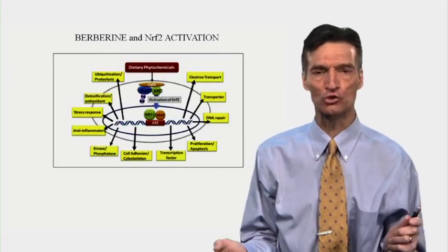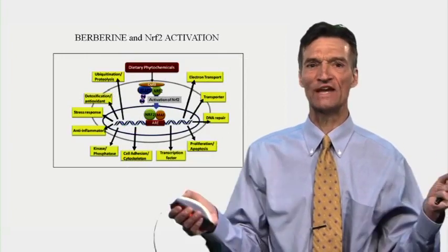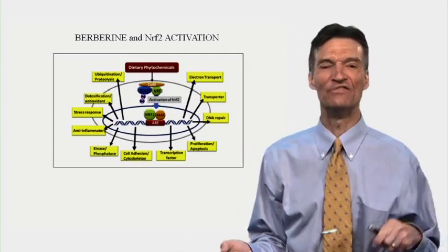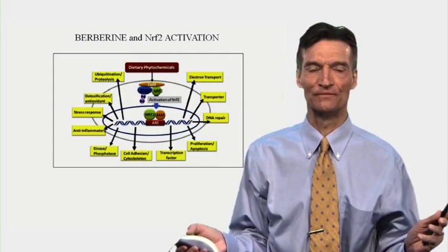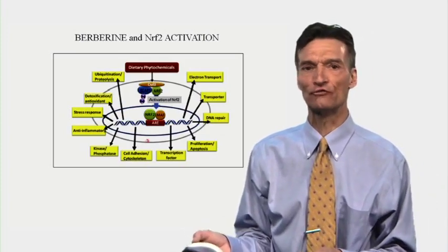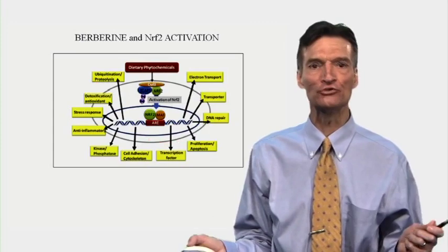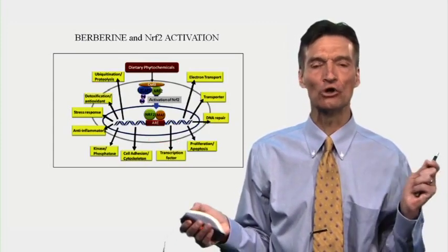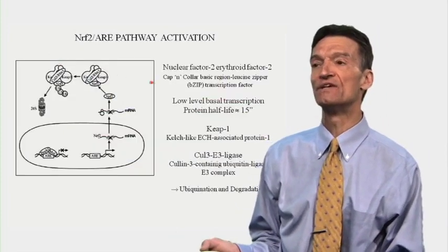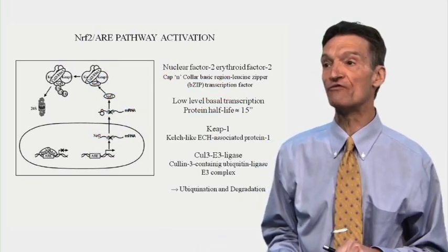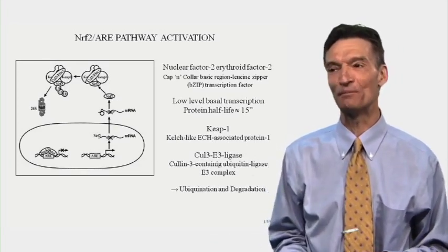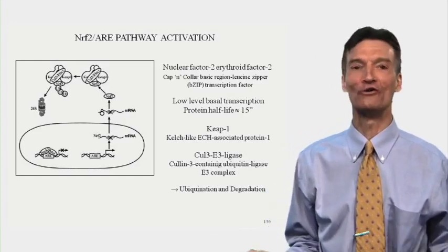Nrf2 is a key molecule to protect us from free radical stress and toxicity. We want our Nrf2 molecules to be in the nucleus reading the DNA — this is why we eat green vegetables and other colorful fruits and vegetables. The pigments in fruits and vegetables will translocate Nrf2. Nrf2 stands for nuclear factor erythroid factor II — it's a cap and collar, basic leucine ZIP transcription factor. Nrf2 is made when the antioxidant responsive element, a section of the DNA, is activated.